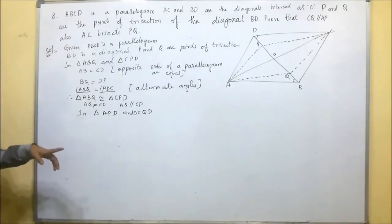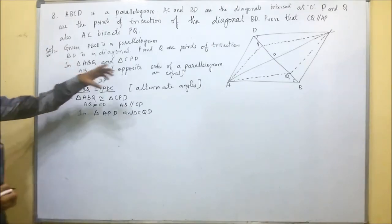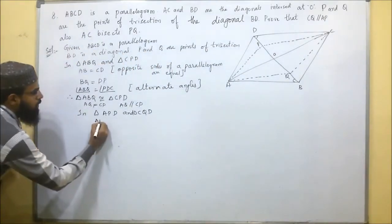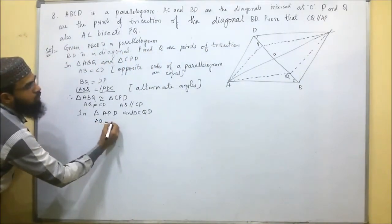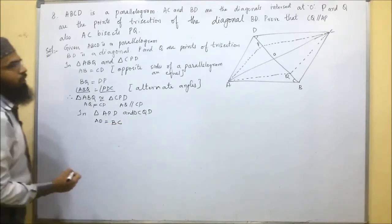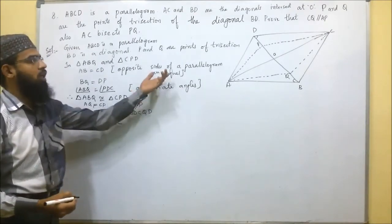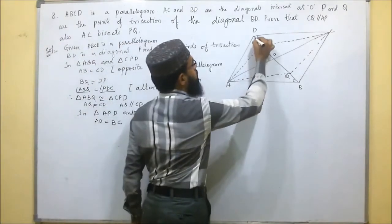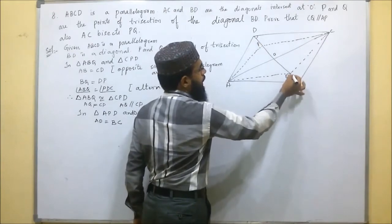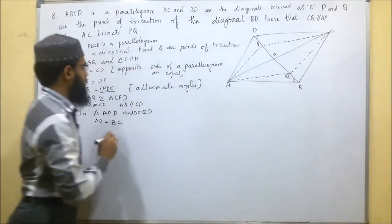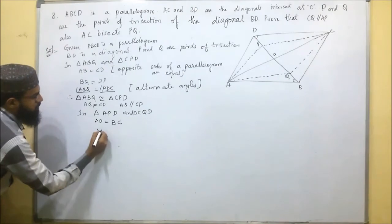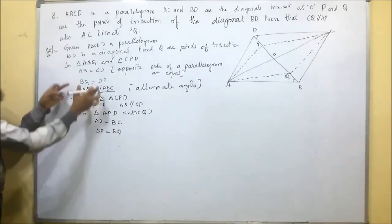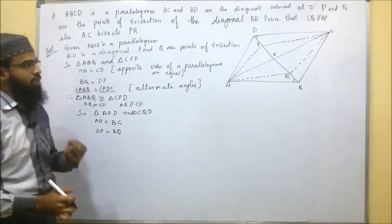Now considering triangles APD and CQD: opposite sides of the parallelogram give us AD equal to BC. Also, DP is equal to BQ, which we established earlier because of the trisection of BD.